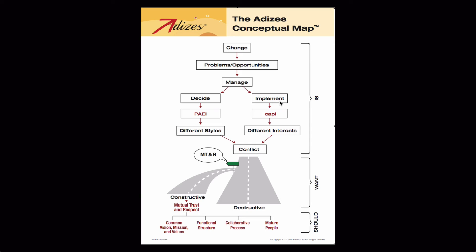So we need mutual trust and respect to make conflict constructive. If it becomes destructive, the change loop doesn't start constructively — destructive conflict will make for change in the wrong direction and we'll end up with bigger problems we can't handle and will fall apart. If the change loop comes from constructive conflict, we'll end up with change that makes us stronger as an organization and able to deal with bigger problems. So that's what we want: a culture of mutual trust and respect. This is nothing new — it's united we stand, divided we fall.